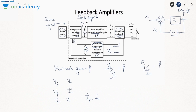In this topic we will discuss two important things: the comparator or mixer network and the sampling network. These two are very important and we will understand how to identify the feedback configuration based on the sampling and mixing network.